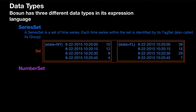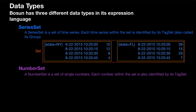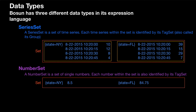The second type is a number set, which is very similar. A number set is a set of single numbers. Each number within the set is also identified by its tag set. So we have our tag set — state equals NY — but we just have a number, 8.5. There's no timestamp associated with it, and there's only a single number, not a series of values. We have the same thing for Florida, and this whole thing is the number set, with items within the set, just like a series set.